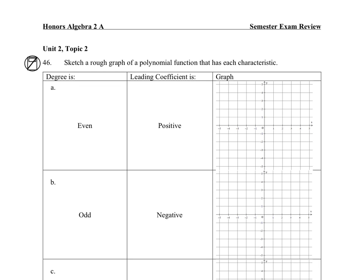For problem 46, sketch a rough graph of the polynomial that has these characteristics. If the degree is even and has a leading coefficient that's positive, here's an example: both end behaviors are going to infinity.